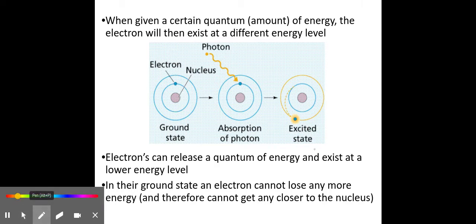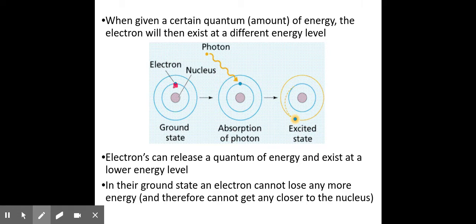When given the right amount of energy, electrons can change their spot around the nucleus. Instead of mauling willy-nilly around the nucleus, imagine them in a particular spot. Give them some energy — heat them up or hit them with a photon of light — and they will move to another place around the nucleus. We call the lowest spot the ground state, and anything higher is an excited state. When electrons have more energy they exist at a higher energy state, but only in particular spots. When the electron releases energy it can exist back down at a lower energy level, again called the ground state.